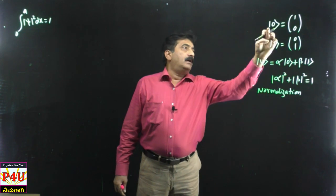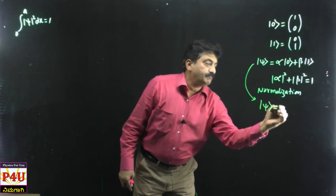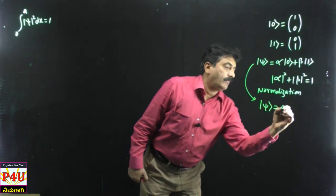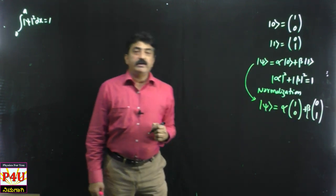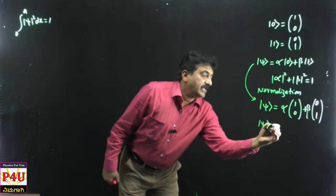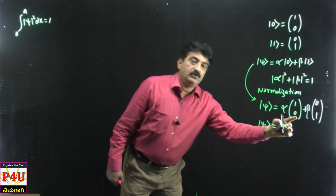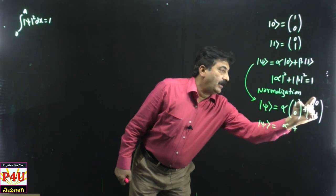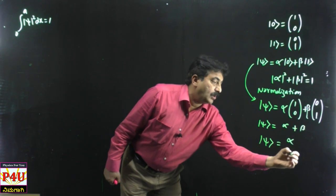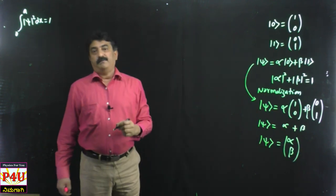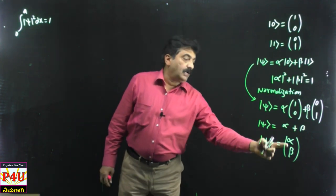Coming back and substituting ket 0 and ket 1 in the equation, ket psi can be written as alpha times the column vector [1, 0] plus beta times the column vector [0, 1]. This gives us alpha times [1, 0] plus beta times [0, 1], which simplifies to the column vector [alpha, beta]. These are all Dirac notations. So the superposed state can be written as [alpha, beta].